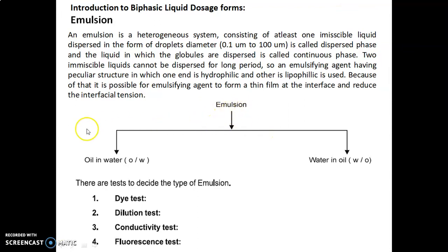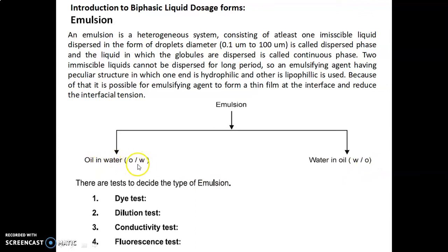The simple classification of emulsion is oil-in-water (O/W) type and water-in-oil (W/O) type. In the O/W type, oil is the internal phase while water acts as the external phase. In the W/O type, water is the internal phase while oil is the external phase.